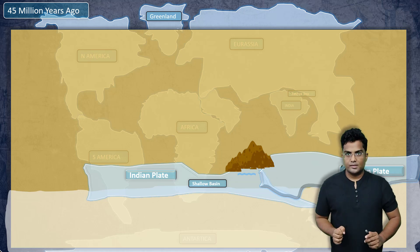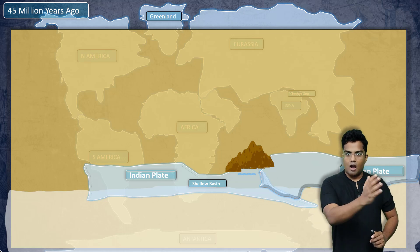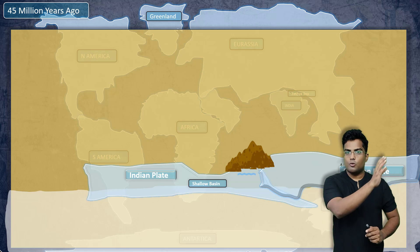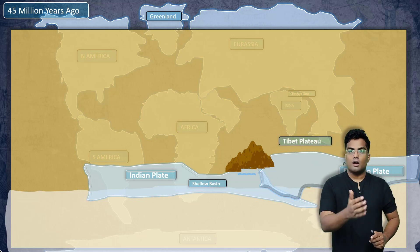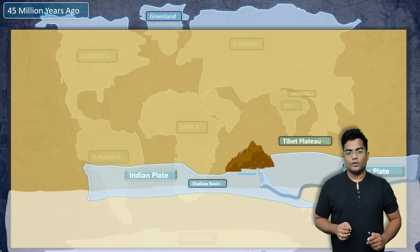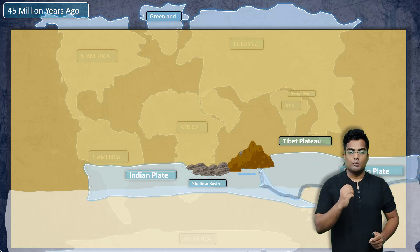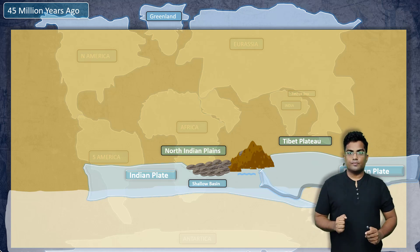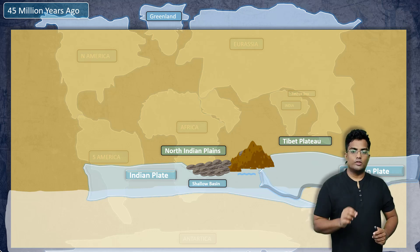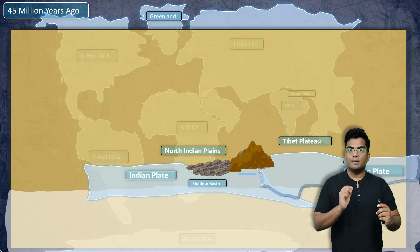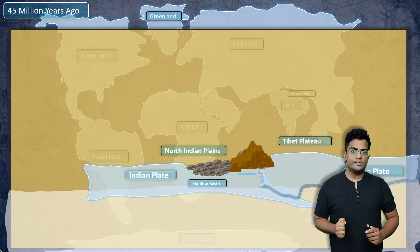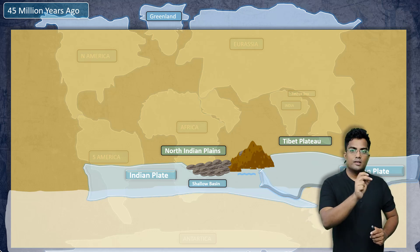Another important structure was formed after the formation of Himalayas — the Indian Plains. After the Himalayas formed, melting snow poured water down into the shallow basin. Slowly, silt accumulated in that shallow basin. More accumulation led to the formation of the Northern Indian Plains. Along with the Northern Indian Plains, the Tibetan Plateau was also formed. So we now have three important superstructures: the Himalayas, the Northern Indian Plains, and the Tibetan Plateau.